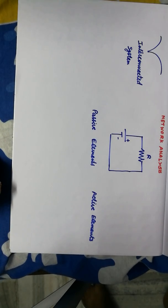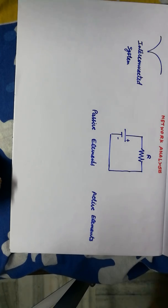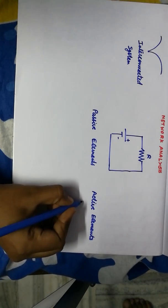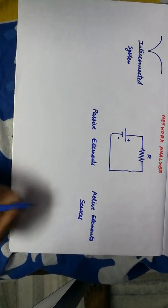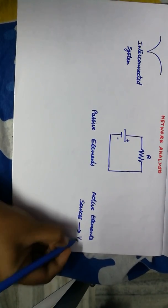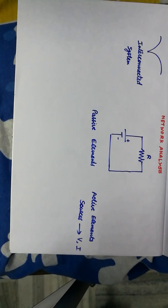What do you mean by the term active? Active means some activity that is taking place. In that sense, you can easily remember active elements are the sources. What do sources do? They supply voltage or current. So, I have two types of sources: voltage and current.